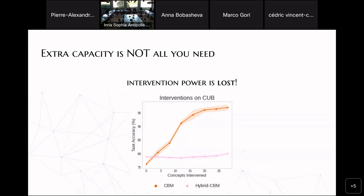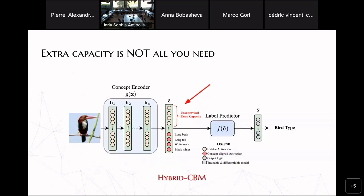Just a comment: when you say unsupervised, it's not directly unsupervised because you get the supervision of the classification — so the network is still getting some supervision for the task. You're correct. What I meant by unsupervised is that those neurons are not specifically supervised with concepts. They do encode some information, but the information comes purely from task supervisions. The other neurons potentially encode both concept information and task information.